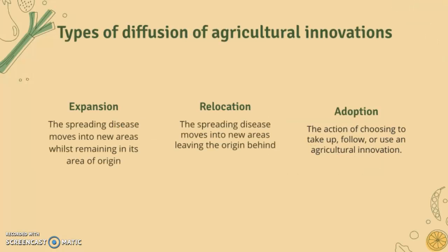Now we're going to look at types of diffusion of agricultural innovation. Expansion is the spreading of something moving to new areas whilst remaining in its area of origin. Relocation is the spreading into new areas leaving the origin behind. Adoption is the action of choosing to take up, follow, or use an agricultural innovation.